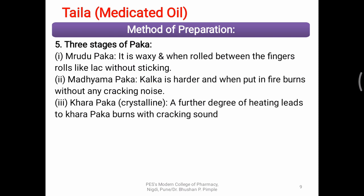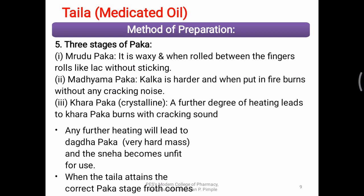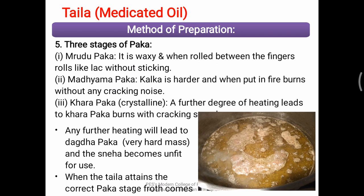Certain formulations are heated only up to Mrudu or soft consistency, some to Madhyama Pak, and others to Khara Pak. If heated further beyond Khara Pak, it may convert into a very hard mass called Dagad Pak — a stone-like consistency — which is not fit for use. When the oil attains the correct consistency, froth appears. Depending on the formulation, after losing moisture from the ingredients, the oil immediately starts showing froth, which is also one of the indicators to stop heating.